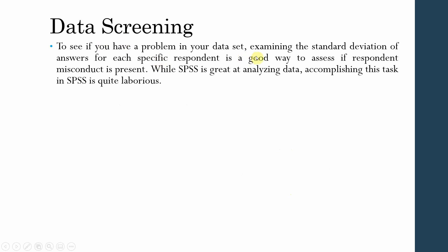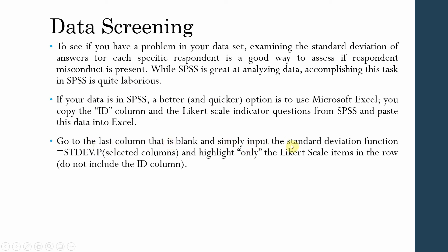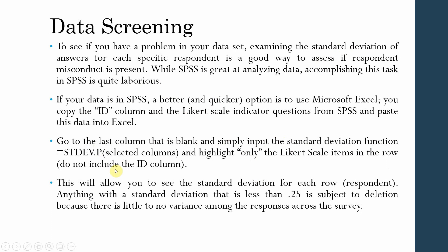Examining the standard deviation of answers for each specific respondent is a very good way to assess if respondent misconduct is present. While SPSS is a great tool, analyzing standard deviation per respondent in SPSS is quite a job, so we will use Excel instead. Go to the last blank column and input the standard deviation function in Excel, highlighting only the Likert scale items — do not include your ID column. This allows you to see the standard deviation of each row for each respondent. Anything with a standard deviation less than 0.25 should be considered for deletion because there is little or no variance among responses across the survey.